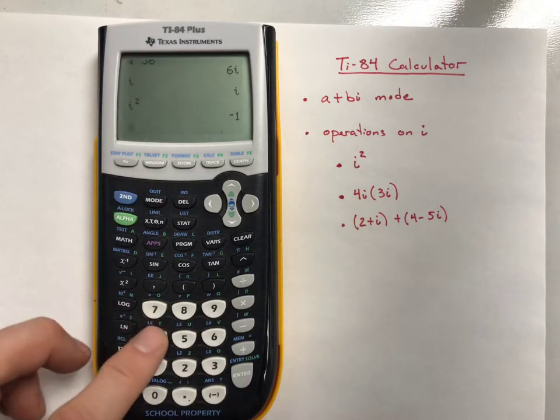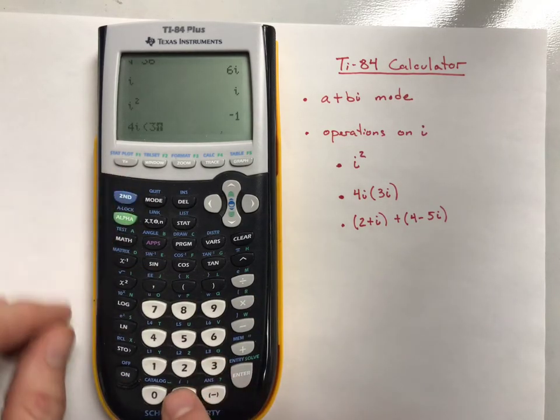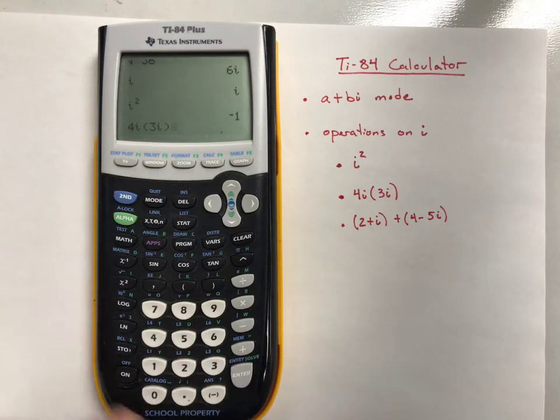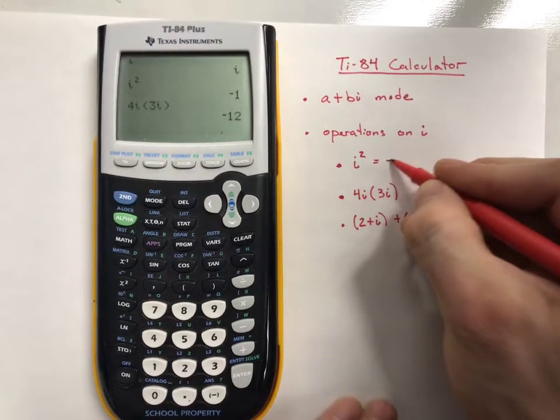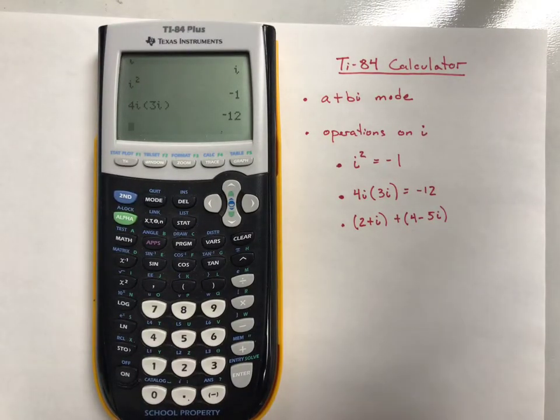If we wanted to do 4I times 3I, continue to type that in using your I value and multiply it. You'll get negative 12. I squared equals negative 1 as we expected, so this will be negative 12 because of the I squared aspect and 4 times 3.